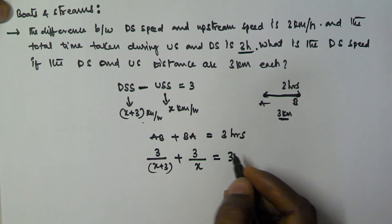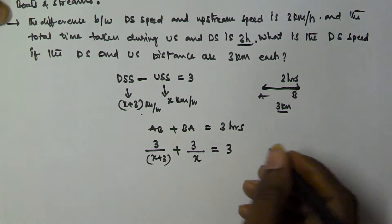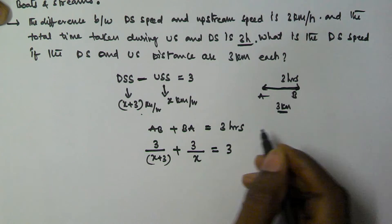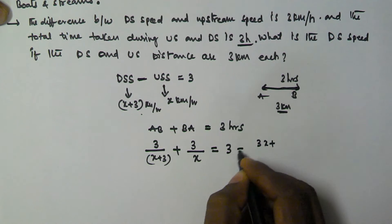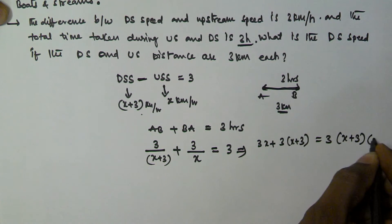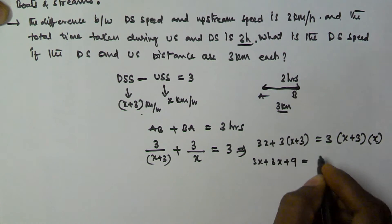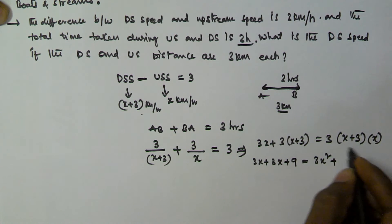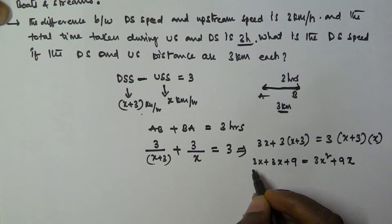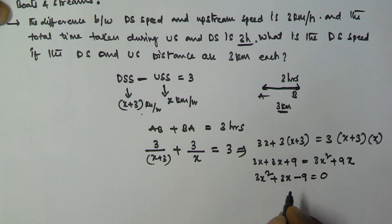Now we will solve this equation to get the value of x, which gives the upstream and downstream speed. Cross-multiplying and expanding: 3x plus 3(x plus 3) equals 3x(x plus 3). This gives 3x plus 3x plus 9 equals 3x² plus 9x. Rearranging: 3x² plus 3x minus 9 equals 0. Taking 3 outside: x² plus x minus 3 equals 0.